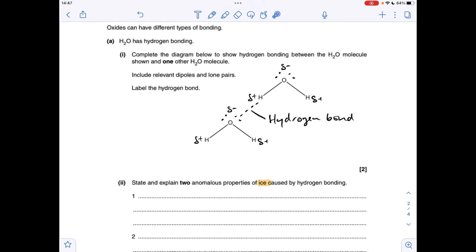Next thing we've got to do is state and explain two anomalous properties of ice, not water, caused by hydrogen bonding. So the first thing we'll talk about is the relatively high melting point of ice. So I'm just saying the melting point is higher than expected, and that's because extra energy is needed to break the relatively strong hydrogen bonds between the H2O molecules.